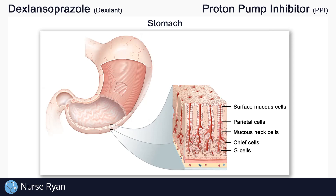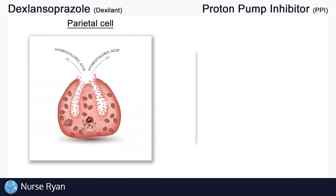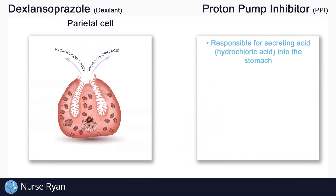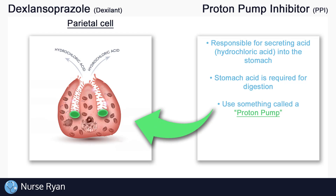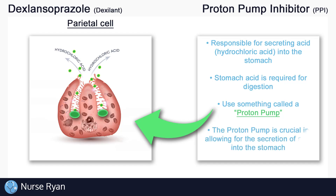In our stomach we have lots of different types of cells. The ones that we're interested in today are called the parietal cells. The parietal cells are responsible for secreting acid into the stomach, and it's this acid that helps to break down food for digestion. Part of how the parietal cells secrete acid is by using something called a proton pump. The proton pump is crucial in allowing for the secretion of acid from the parietal cells into the stomach.